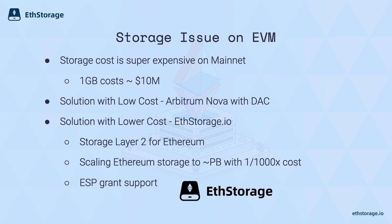We still have a lot of problems to solve at the infrastructure layer. The critical issue is that storage costs on Ethereum mainnet are super expensive — one gigabyte of on-chain data costs roughly $10 million, which is unacceptable for most Web2 applications, even for many NFTs with very little metadata. One solution is Arbitrum Nova with a data availability committee, which we already experimented with for Vitalik's blog, but we believe we need even better solutions.